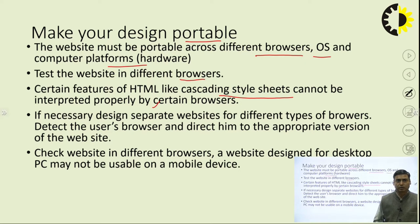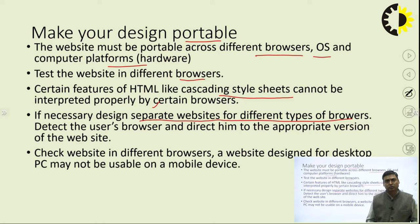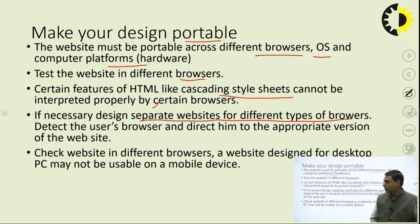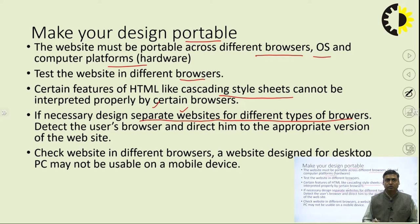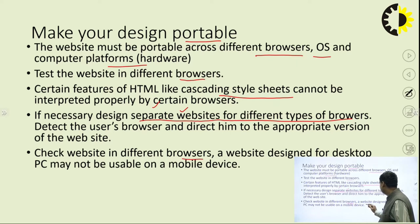It is necessary to have separate websites for different types of browsers. Sometimes if a particular CSS works in Google Chrome but not in Internet Explorer, it is better to have a different website for that particular browser. You need to identify which browser is accessing your website, and if it is not compatible, redirect to a different website that is compatible for that particular browser. Also, a website designed for the desktop may not be suitable for a mobile device — that is a very important part.